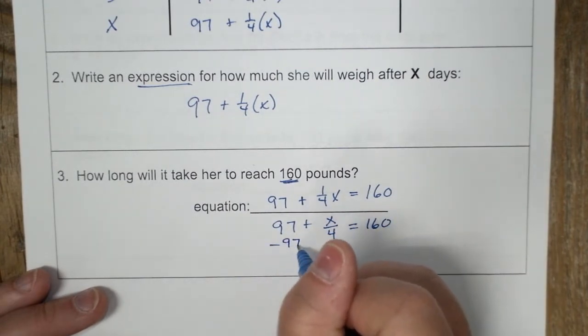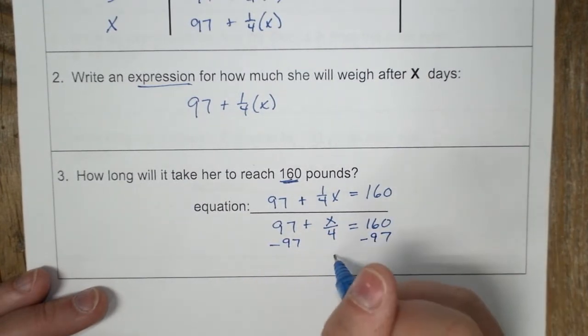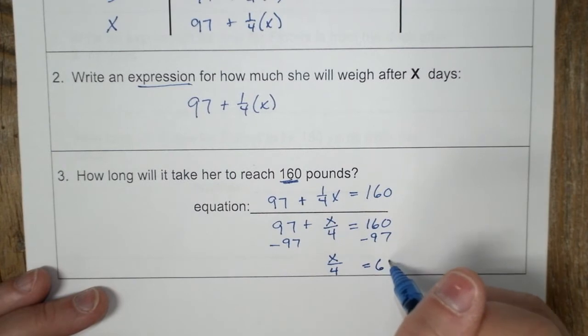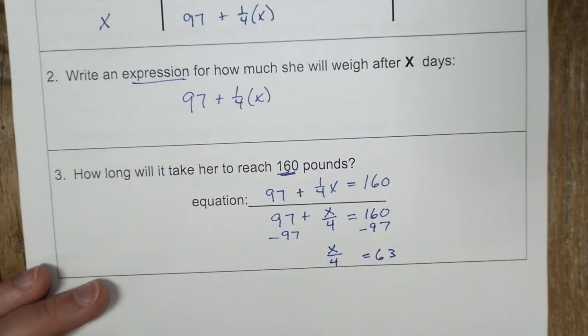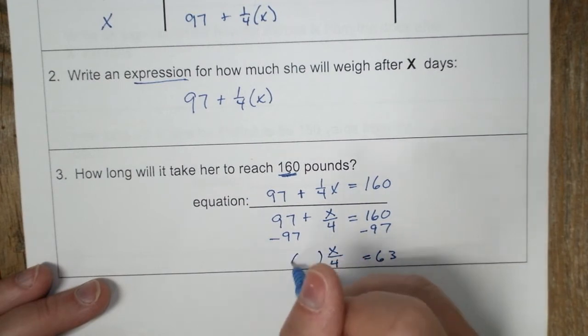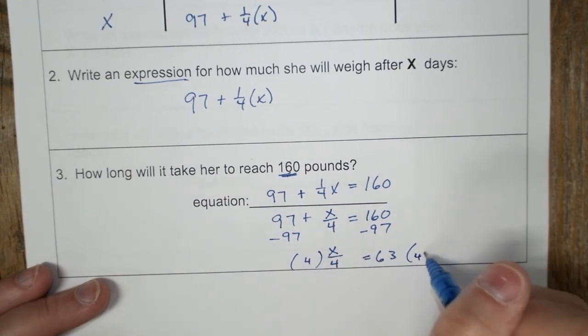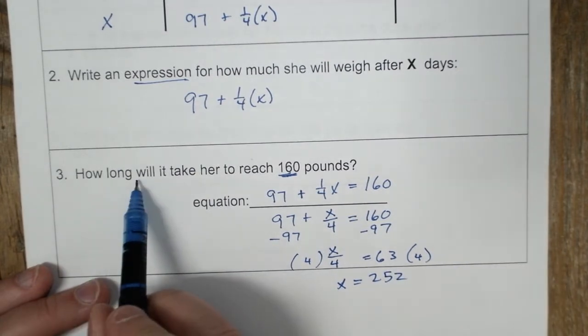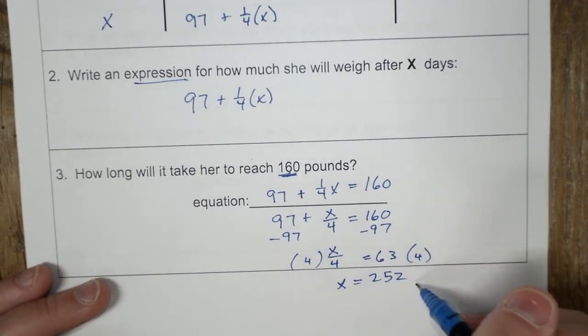I'm going to subtract 97 from both sides. X over four equals 63. And then I'm going to multiply both sides by four. And I'm going to have X equals 252. How long? 252 days.